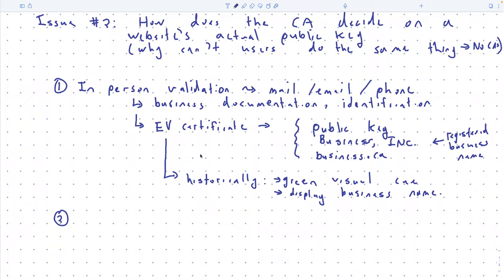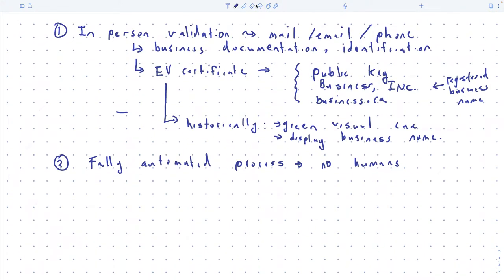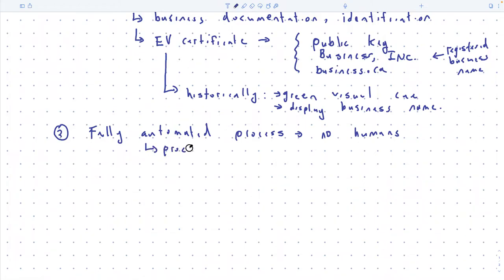What would be nice is a fully automated way to get a certificate — one that doesn't involve a human looking at documentation. So what CAs also offer is a fully automated process. There are no humans, just a server, and you're going to try to convince the server that you are basically concordia.ca. The end result of this is what we call a DV certificate.